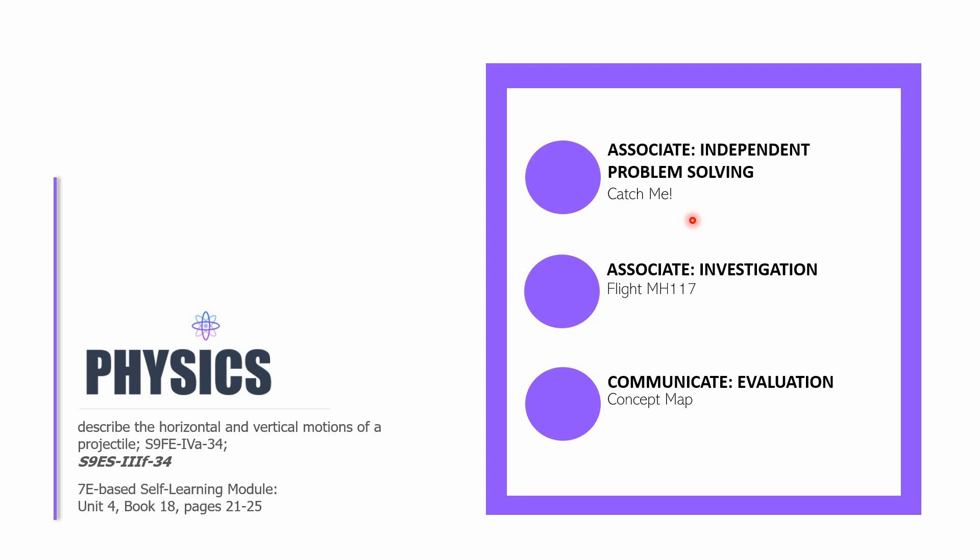Okay, so for this video lesson, we are still in the process of mastering the following learning competency: Describe the horizontal and vertical motions of a projectile. So that is our code right there. If you want to follow through with some reading material, you can open your 7e-based self-learning module in Science 9, Unit 4, Book 18, pages 21 to 25. Let's begin.